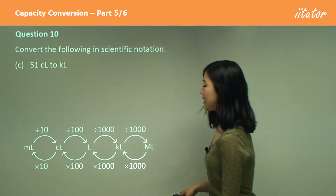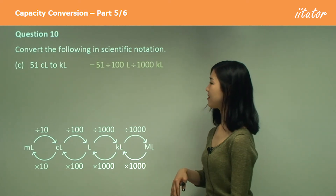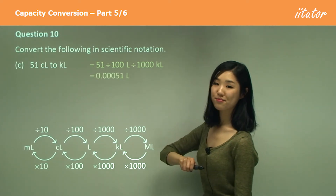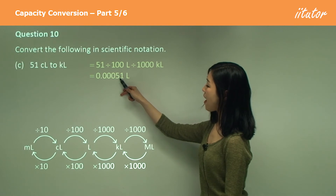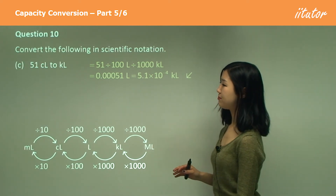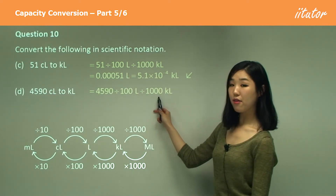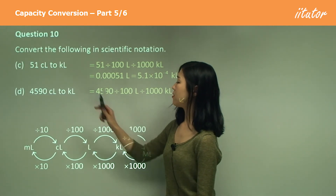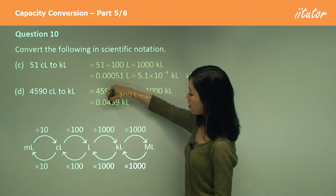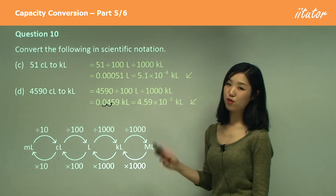51 centilitres to kilolitres — centilitres is small to large. So we divide by a hundred and divide by a thousand, going back 1, 2, 3, 4, 5 decimal places. Put the decimal in front of the 5 and we have to go back 1, 2, 3, 4 places — so it's 5.1 times 10 to the power of negative 4. For part D, same conversion: divide by a hundred and divide by a thousand again, going back five decimal points, which gives 0.0459. In scientific notation, put the decimal there and go back 1, 2 places — so it's 4.59 times 10 to the power of negative 2, because we're going backwards.